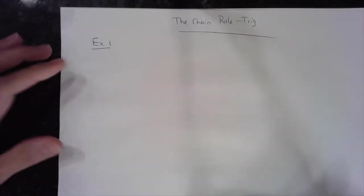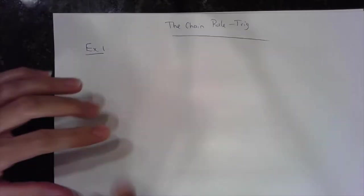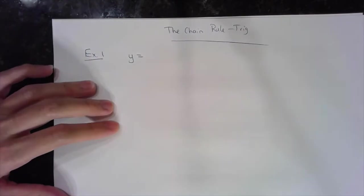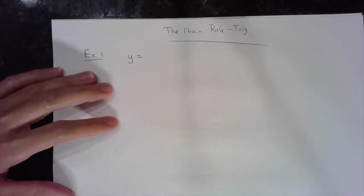We're going to do a couple of examples talking about the chain rule with trigonometry. In the last couple of videos we did it with simple algebraic expressions with the product rule and the quotient rule, but sometimes students have an issue with the chain rule when it involves trigonometry.